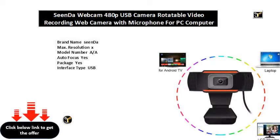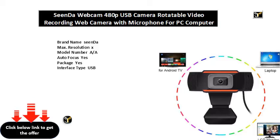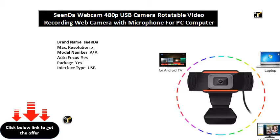Brand name: Senda. Max resolution: X. Model number: A/A. Auto focus: yes. Package: yes. Interface type: USB. Pixels: mega. Image sensor: CMOS. Video mode: MJPG and YUI. Interface: USB port. Transmission rate asterisk. Transmission rate: F/S.